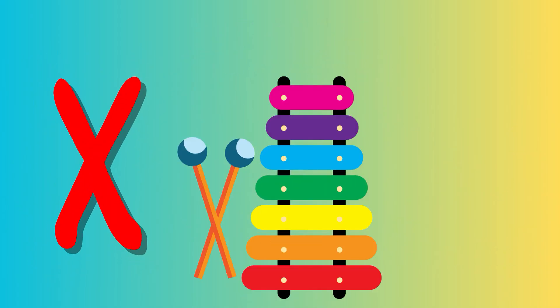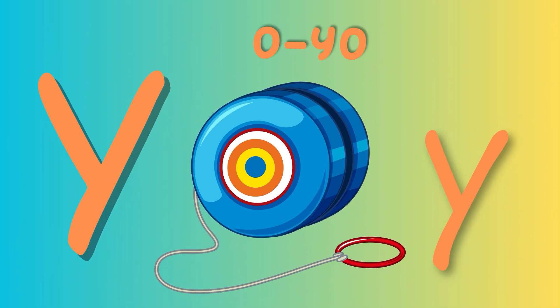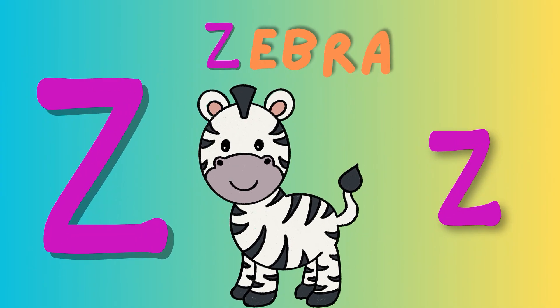W is for Whale. Whale, Whale. This is a Whale. Whale, Whale. X is for xylophone. Xylophone, xylophone. This is a xylophone. Xylophone, xylophone. Y is for yo-yo. Yo-yo, yo-yo. This is a yo-yo. Z is for zebra. Zebra, zebra. This is a zebra.